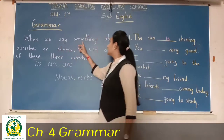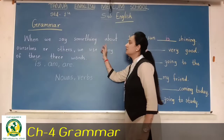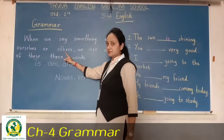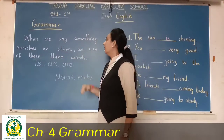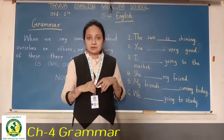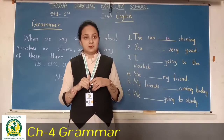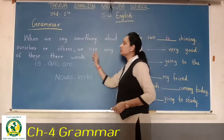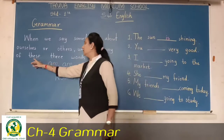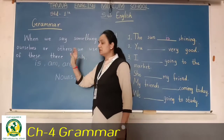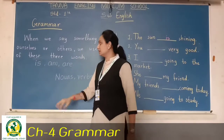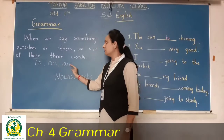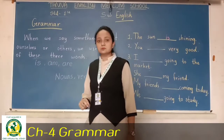When we say something about ourselves or others — hum koi bhi baat karte hai, hummare baare mein ya kisi or ke baare mein — we use these three words: is, am, are. Yeh teen words hum use karte hai.